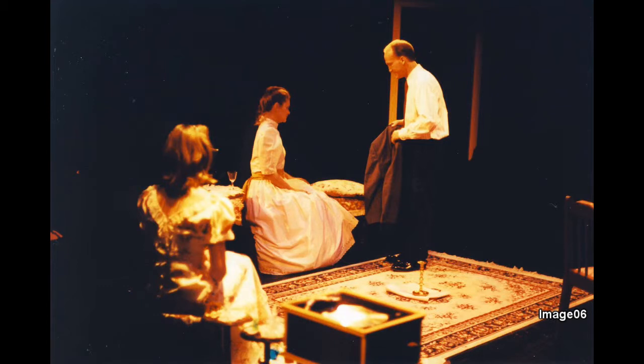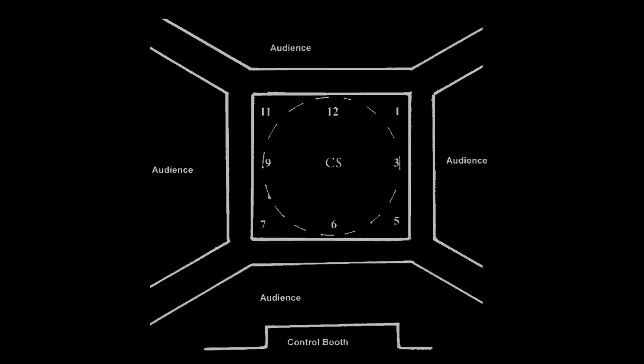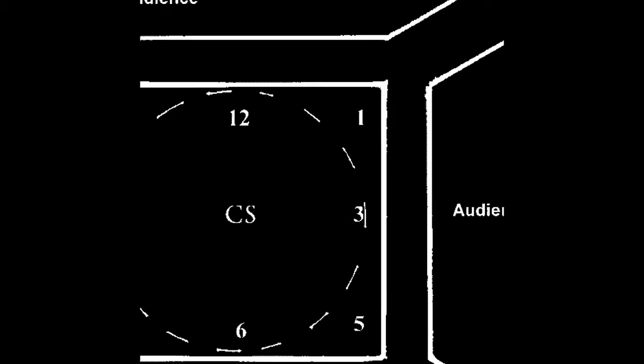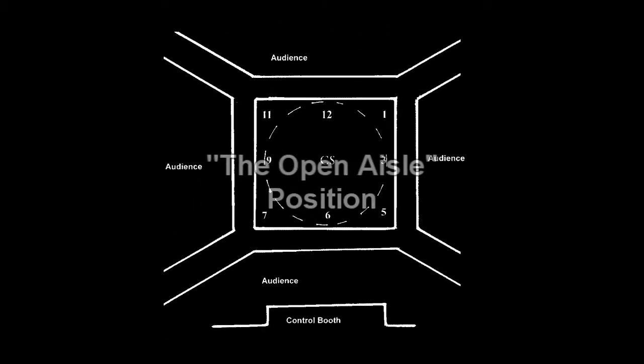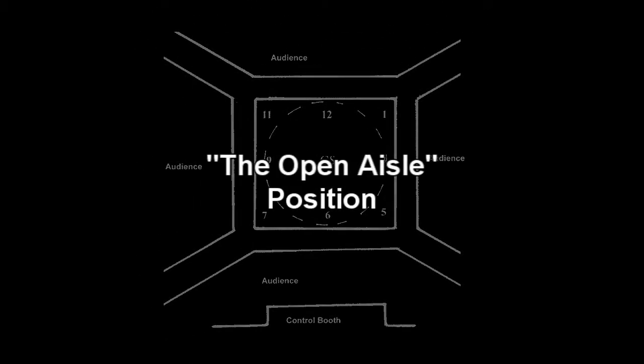The main staging convention for the arena space is often referred to as the clock and aisle technique of staging. The stage floor, rather than being charted with nine arbitrary blocks as the proscenium arch is, is considered as a clock. The outer locations on the stage are referred to by such terms as the nine o'clock position, the three o'clock position, and so forth. Actors move on the stage either in clockwise or counterclockwise directions. The open aisle position is very important, and since there are four open aisle positions, it is common to find actors on the arena stage standing at the outside of the stage space facing inward with their backs to one of the four aisles.